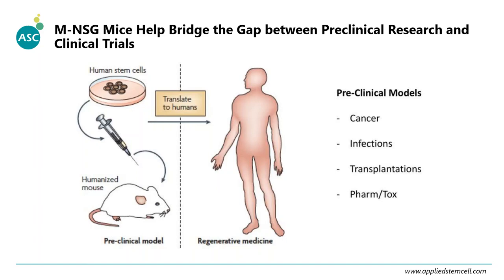All these figures tell us that NSG mice can help bridge the gap between pre-clinical research and clinical trials. This model could be useful for all kinds of disease models, including cancer, infectious disease, transplantation research, and pharmacology or toxicology research.